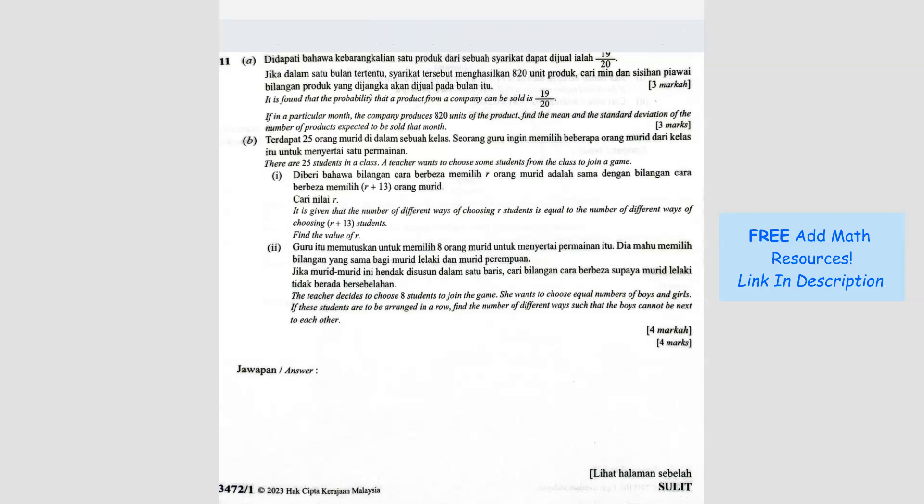Question number 11. It is found that the probability that a product from a company can be sold is 19 over 20. So that's the probability. If in a particular month the company produces 820 units of the product, find the mean and standard deviation. From here we know that n equals 820. So there are 820 units and the probability of it being sold is 19 over 20.